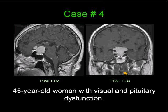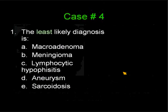Ready for the question? The least likely diagnosis in this case is: A, a macroadenoma; B, a meningioma; C, lymphocytic hypophysitis; D, an aneurysm; E, sarcoidosis.